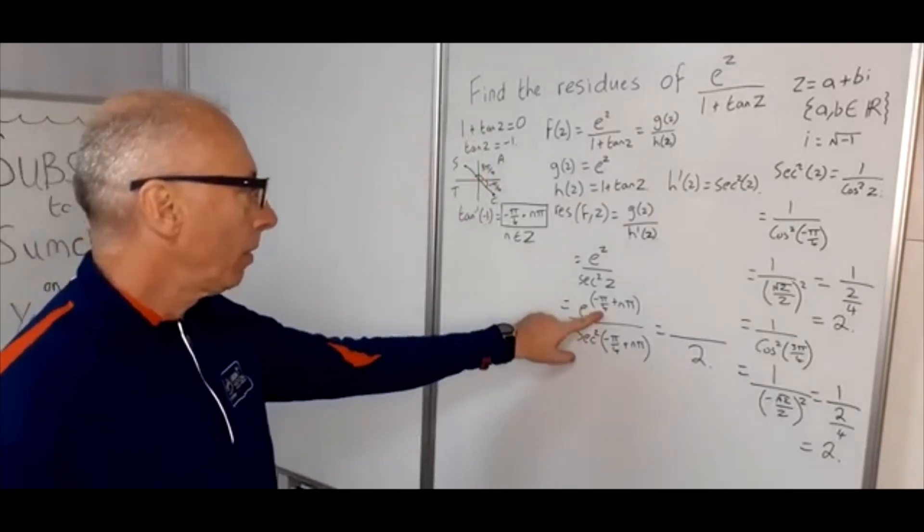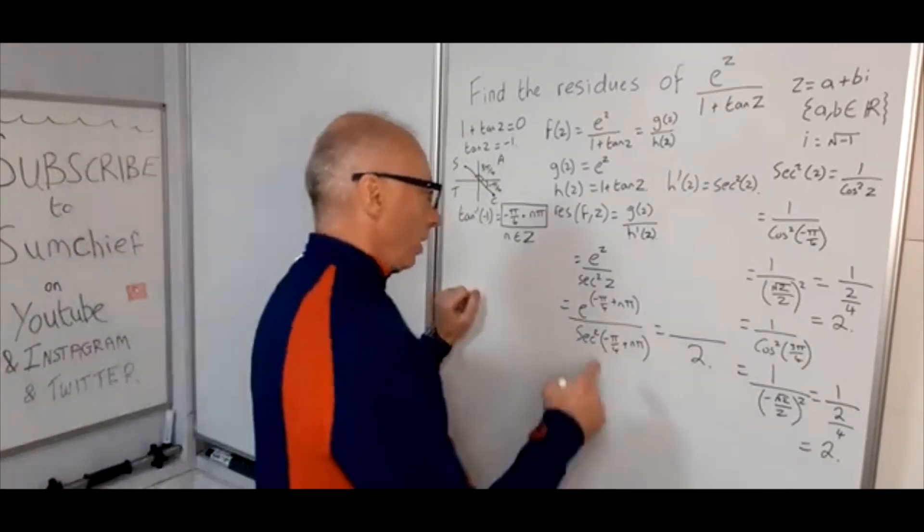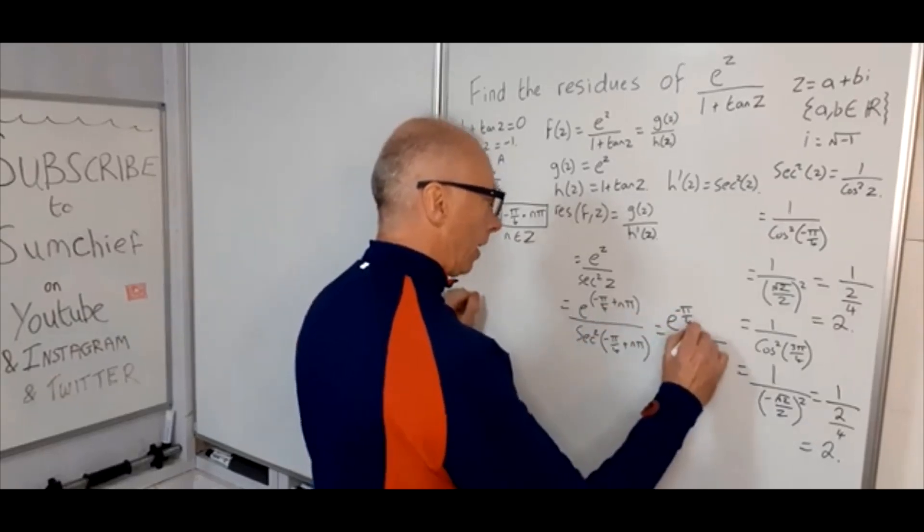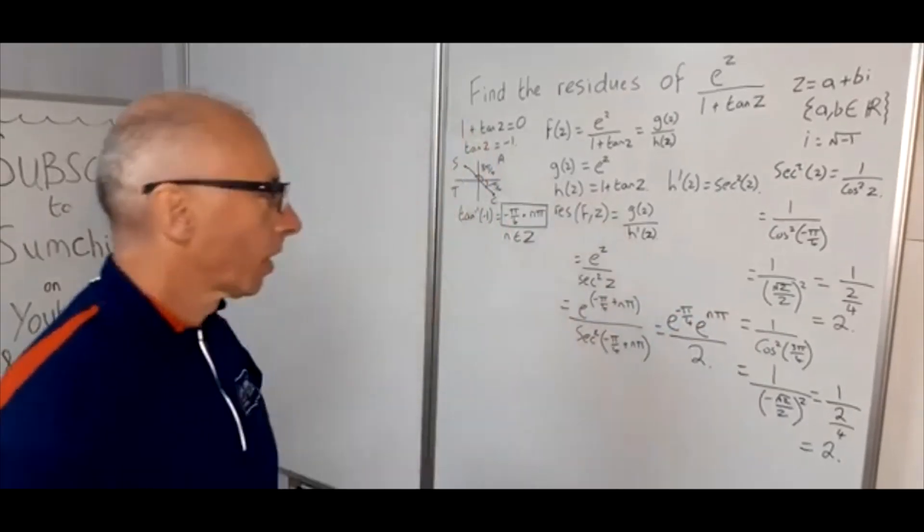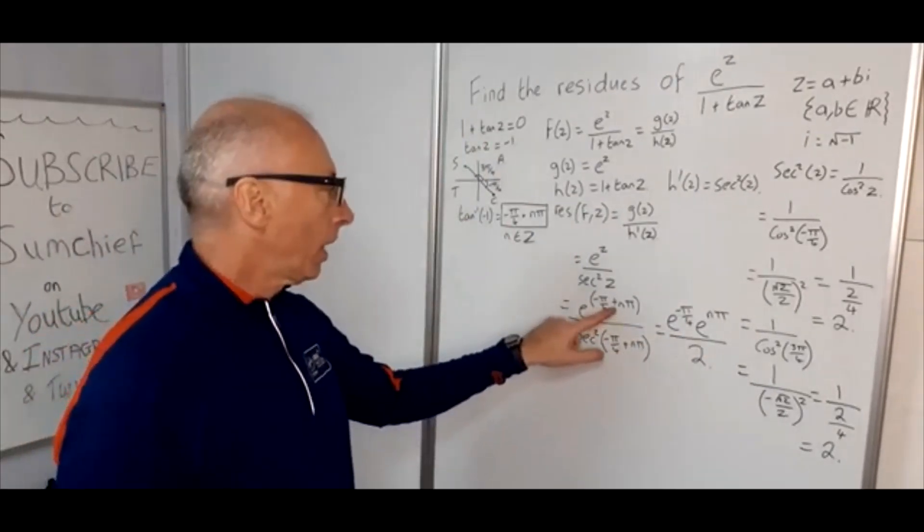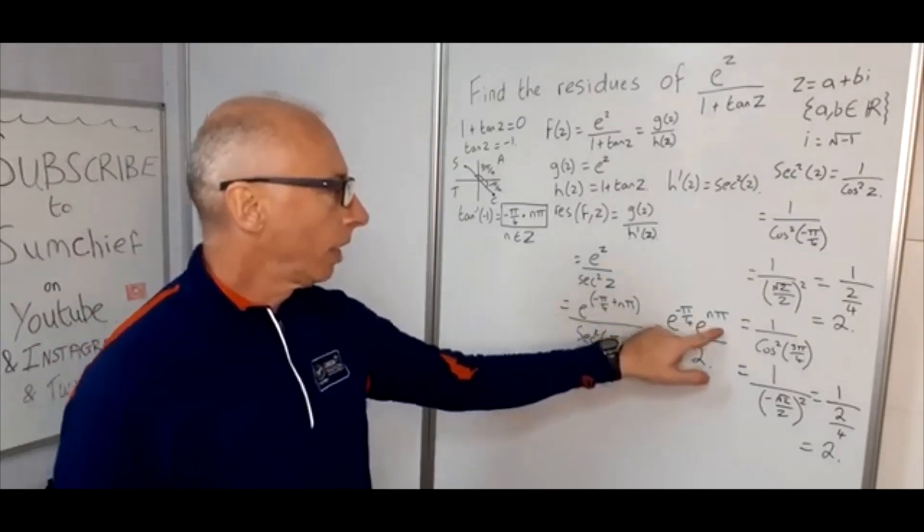So what about e^(-π/4 + nπ)? So we can write that as e^(-π/4) times e^(nπ). So that's a valid way of writing that, by the exponential rule—the plus, we can just multiply. So e^(-π/4) times e^(nπ).